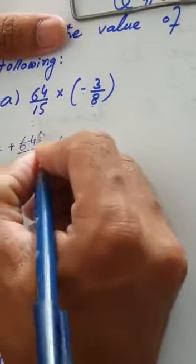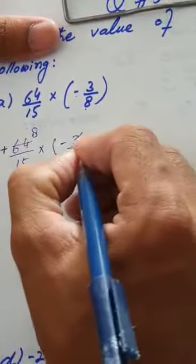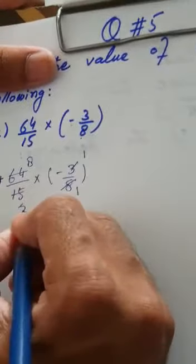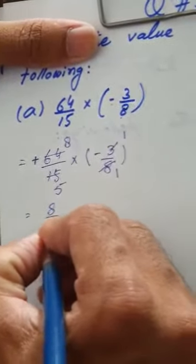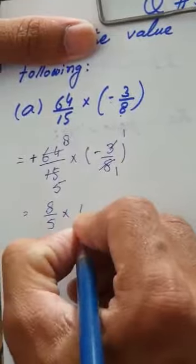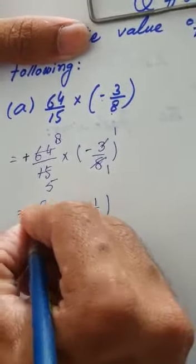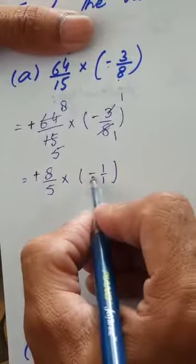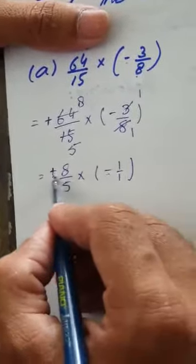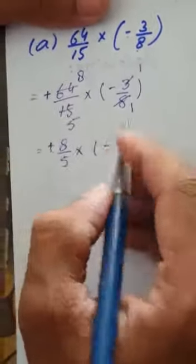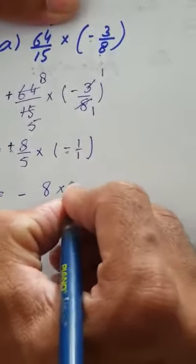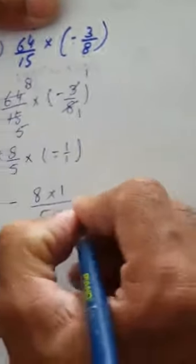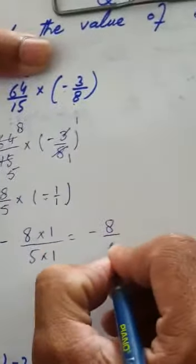8 eights are 64, and 3 fives are 15. We are left with 8 over 5 multiplied by minus 1 over 1. There is a plus and a minus, and since the two symbols are different, minus will be our answer. So 8 multiplied by 1 over 5 multiplied by 1 gives minus 8 over 5.